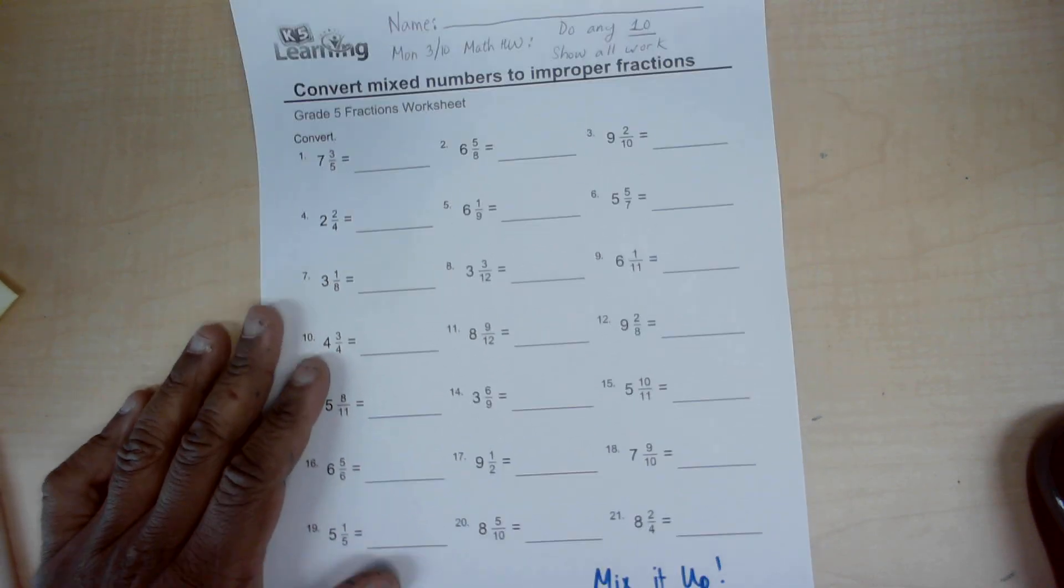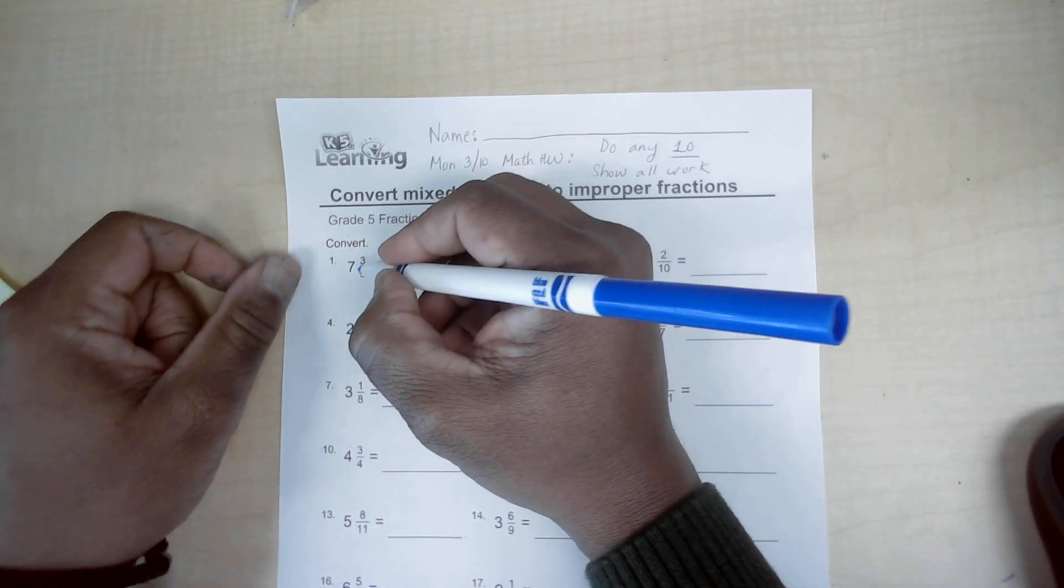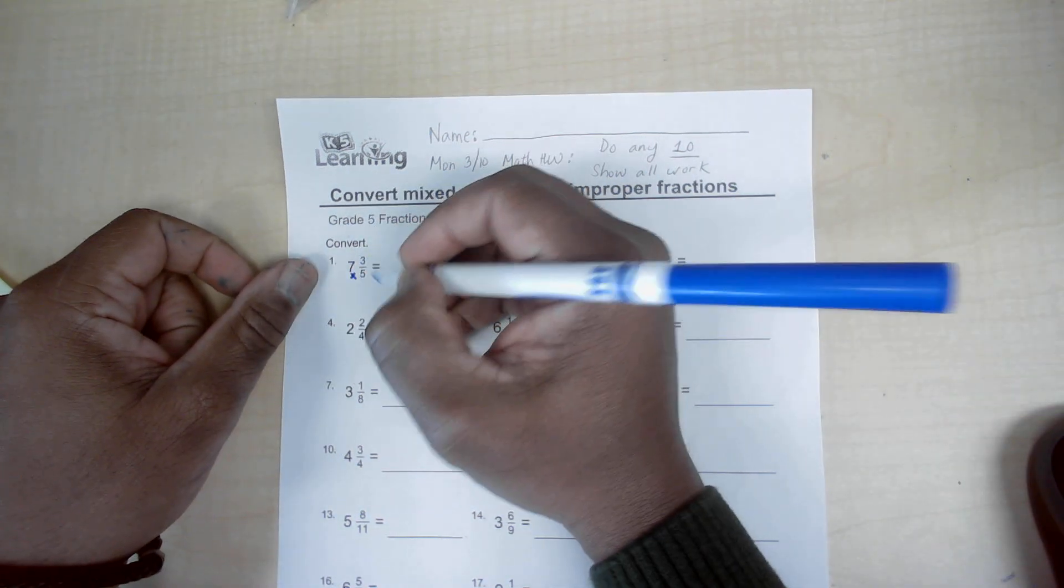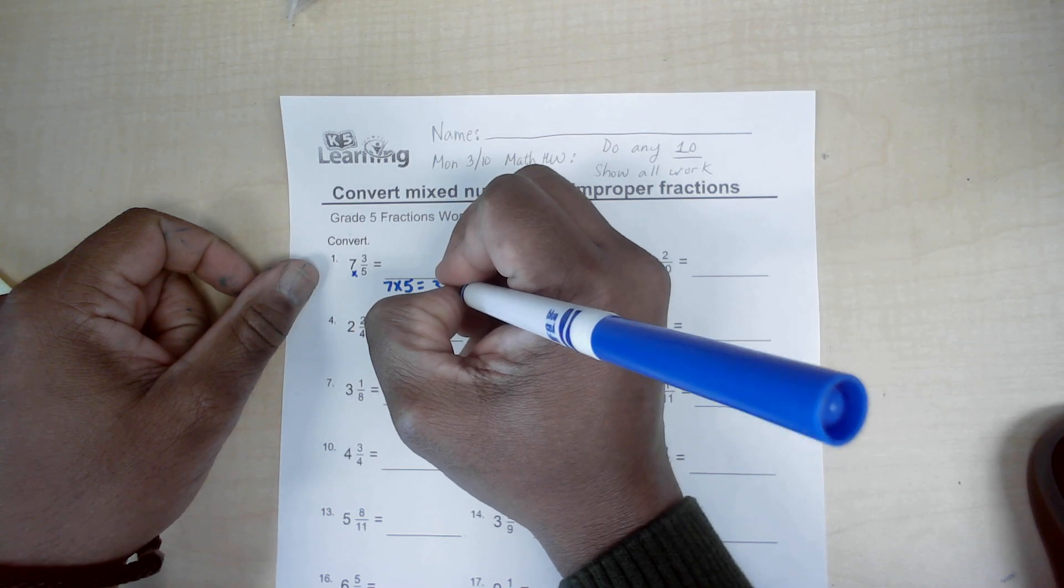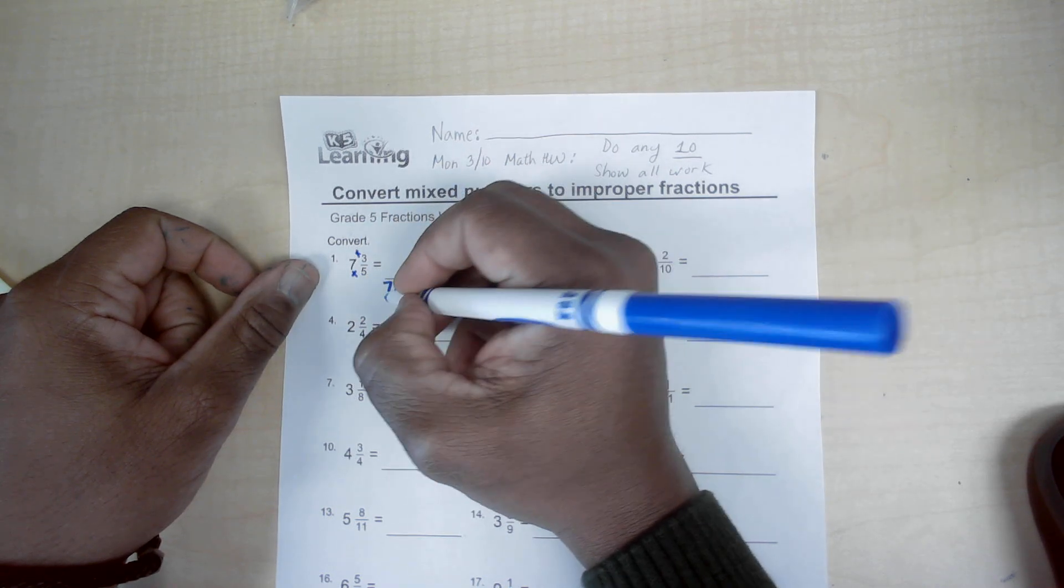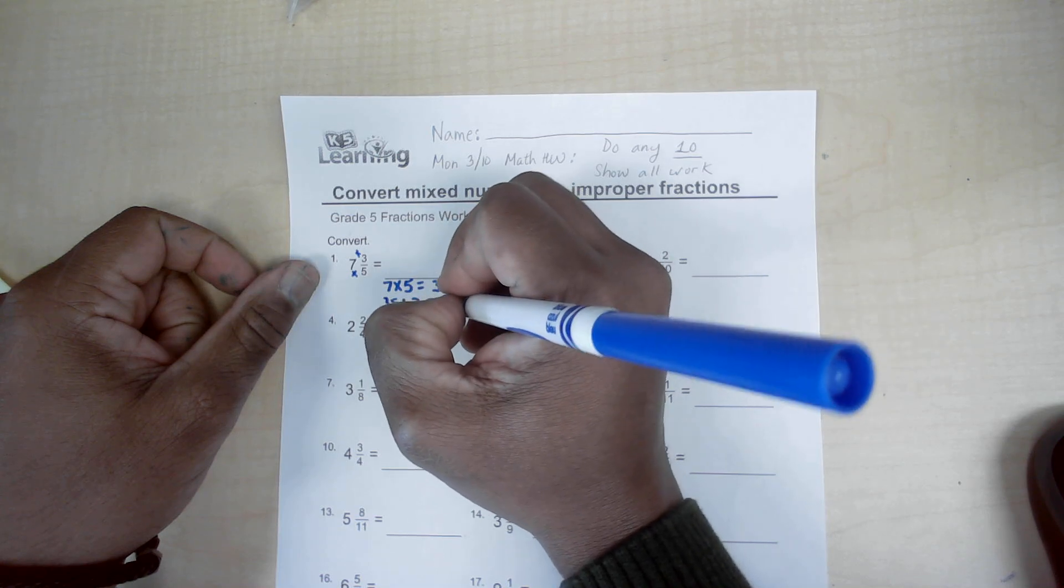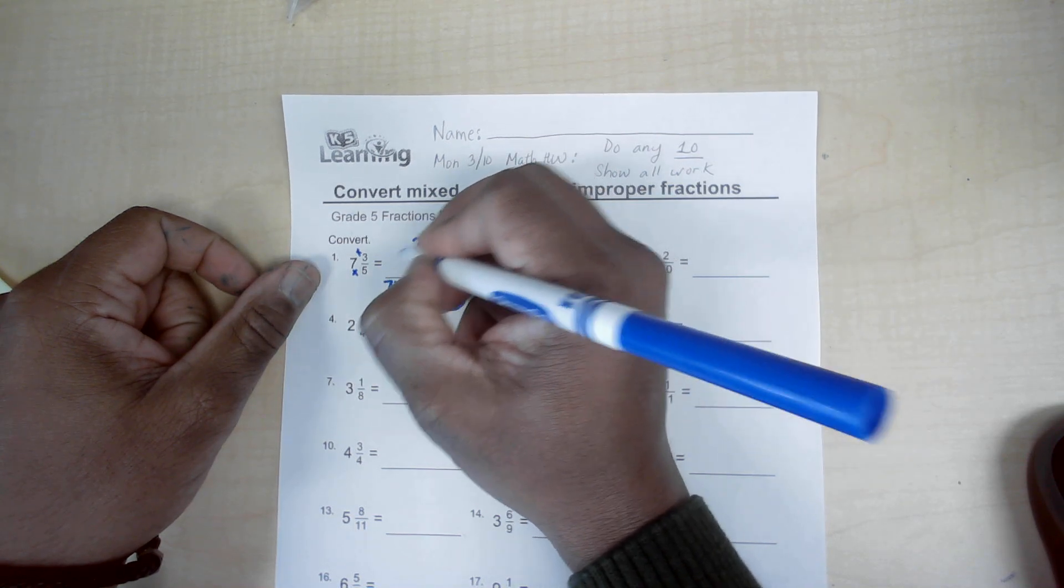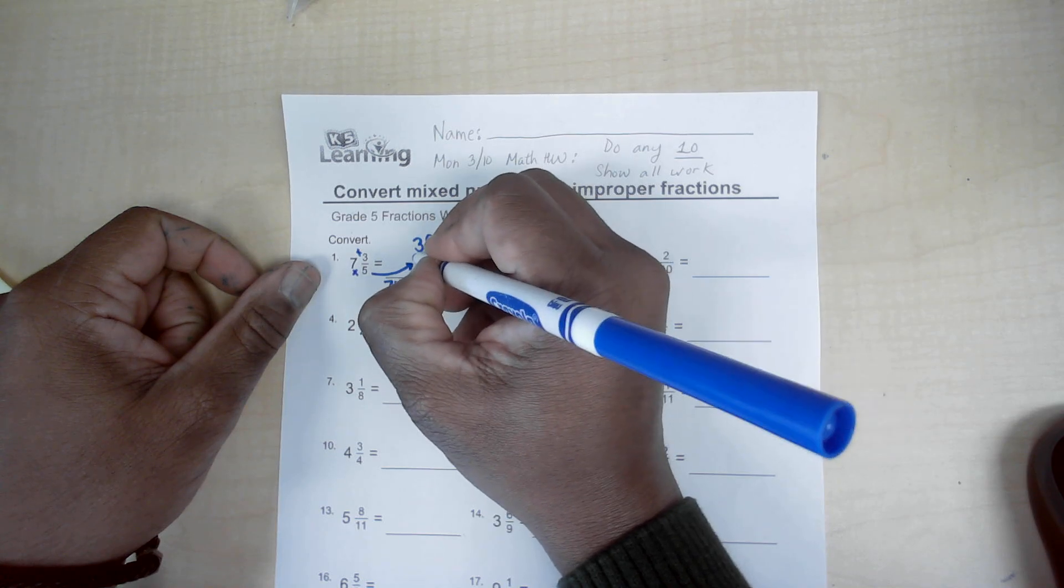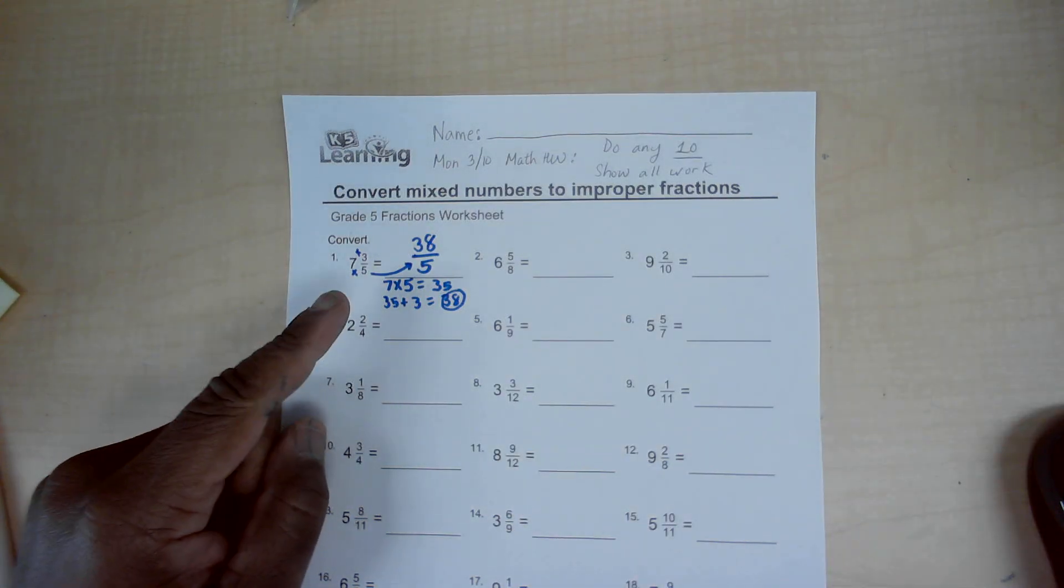So mix it up. So 7 and 3/5, what we want to do is multiply 7 times 5 to get 35, and then we add 35 and 3 to get the numerator. So it's 38, and then the denominator is 5, so it's 38/5. That's how you show your work.